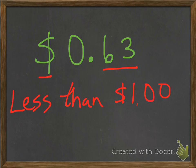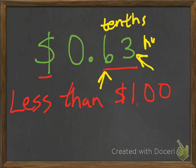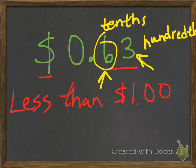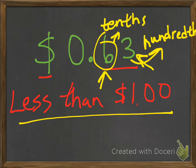I want to point out that it's 63 cents. The 6 right here is actually in the tenths place — there are 6 tenths. And the 3 right here would be in the hundredths place — there are 3 hundredths. So the 6 would be 60 cents, 6 tenths, and the 3 would be 3 pennies, 3 hundredths. Together, they are less than a dollar.